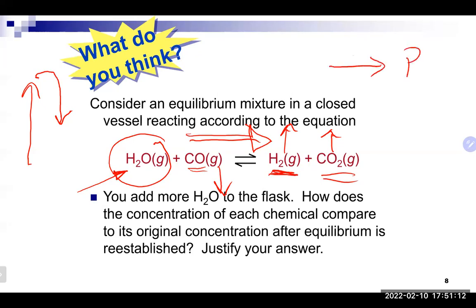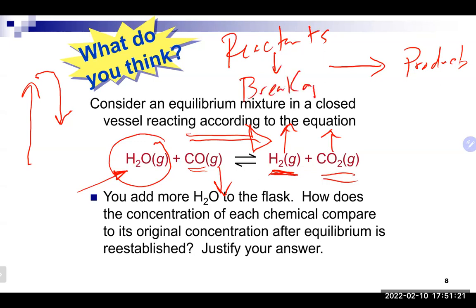CO went down because in order to make products in a reaction, all your reactants must basically break apart so they can reassemble on the other side. Making products requires CO to be used up — if CO didn't go down, you'd have no way to make CO2. You need to free up some carbon to make new bonds.